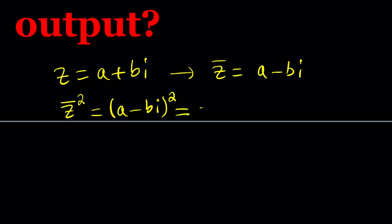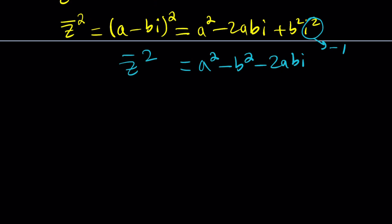Z bar squared is just going to be A minus BI squared. And this is going to become A squared minus 2ABI plus B squared I squared. But I squared is negative 1. We talked about it like millions of times. This is negative 1.